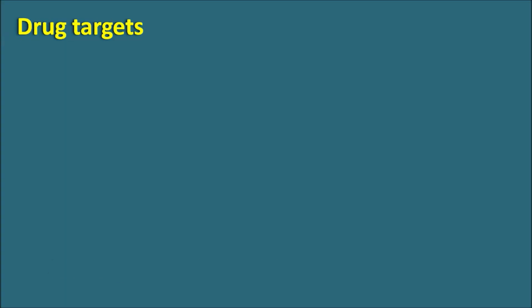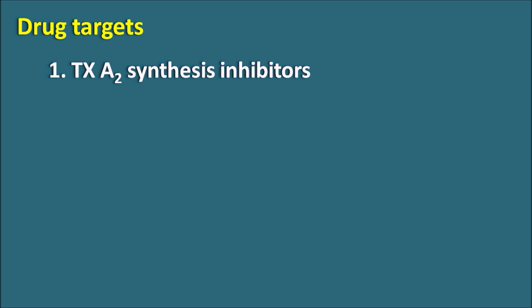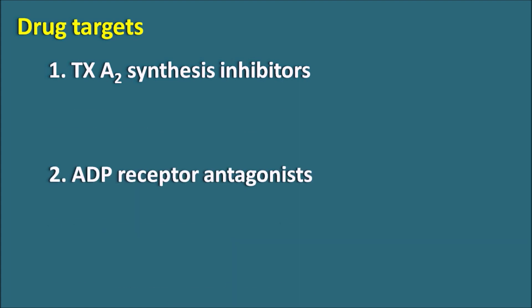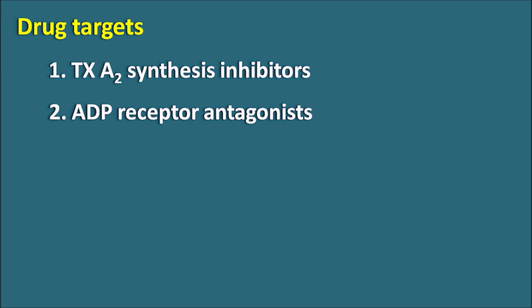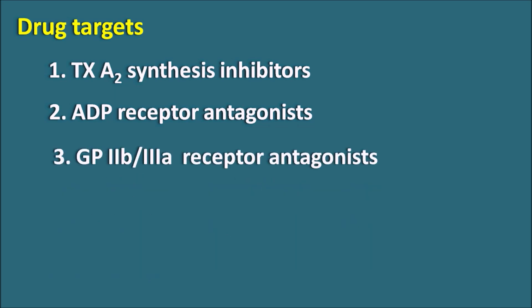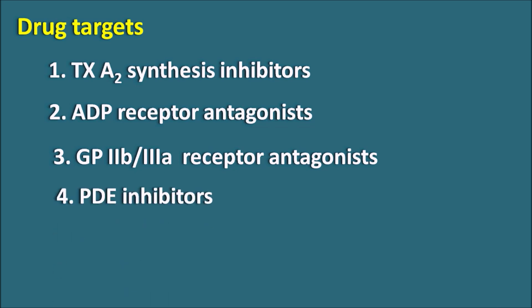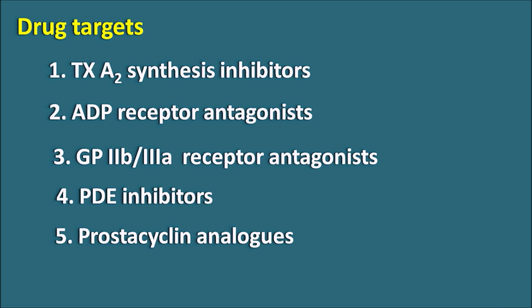The drug targets are: first, thromboxane A2 synthesis inhibitors, because thromboxane A2 is responsible for platelet aggregation. Second, ADP receptor antagonists, as adenosine diphosphate binds to P2Y receptors increasing platelet aggregation. Third, GP2B/3A receptor antagonists. Fourth, phosphodiesterase inhibitors, which produce vasodilation that suppresses platelet aggregation. Fifth, prostacycline analogs — prostacycline like prostaglandin I2 can produce vasodilation, thereby inhibiting platelet aggregation. These are the various drug targets used as antiplatelets.